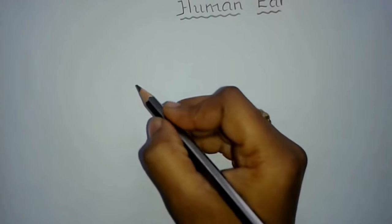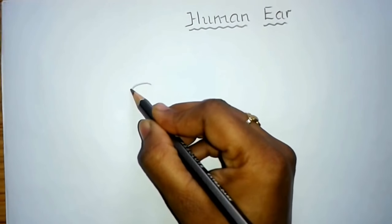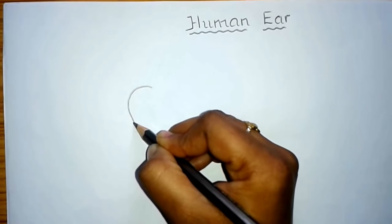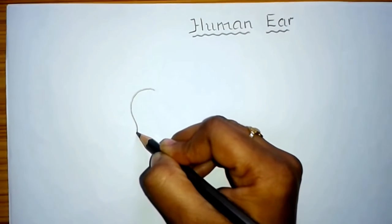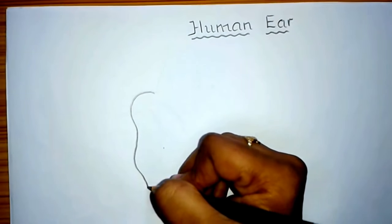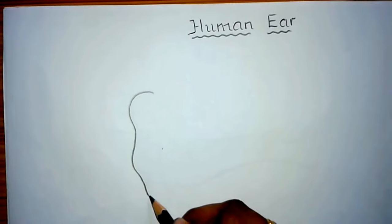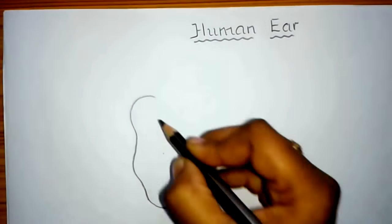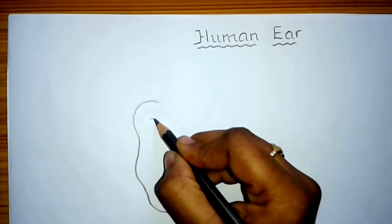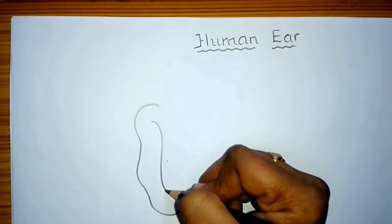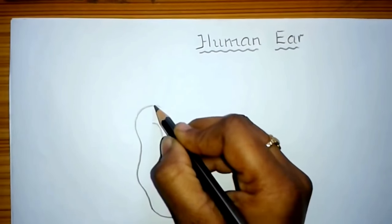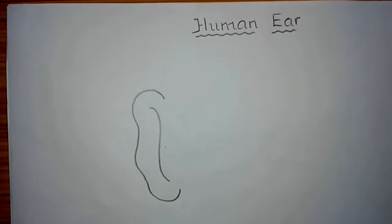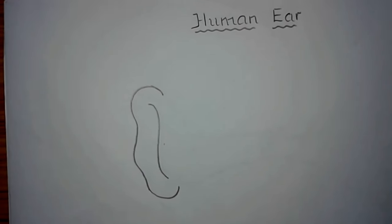First, let us draw the pinna, which collects the sound waves and directs them into the auditory canal. So children, draw the pinna like this. Inside the pinna, just draw an S-shaped curve. So this pinna collects the sound waves and directs them into the auditory canal.